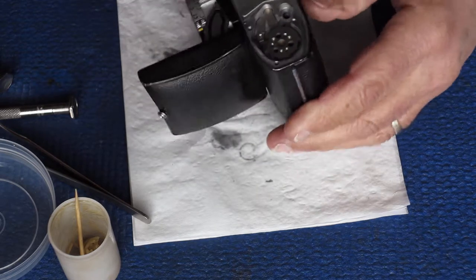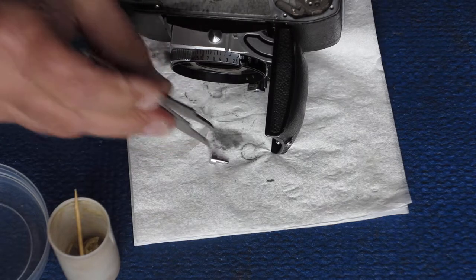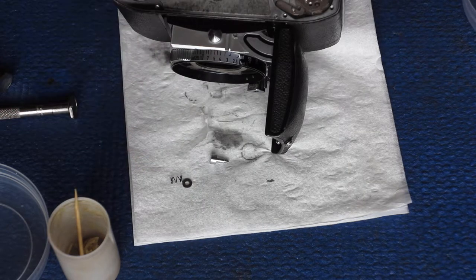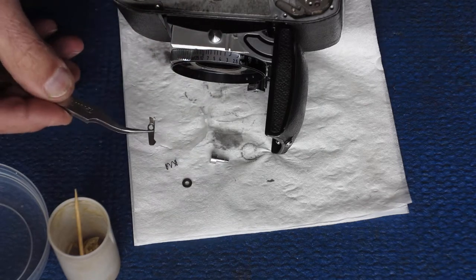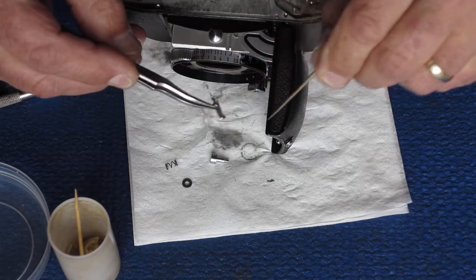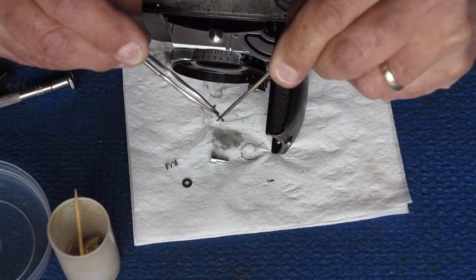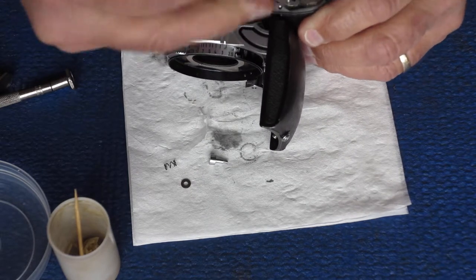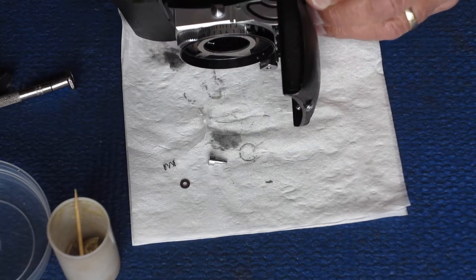So what we have to do now is put in the rewind lever button. Rewind button. And its return spring and washer. This little lever here locks the rewind button in position. So I normally put a tiny smear of molybdenum grease on the inside as a lubricant. More on the end. This is where it contacts the film advance. That goes in under there.